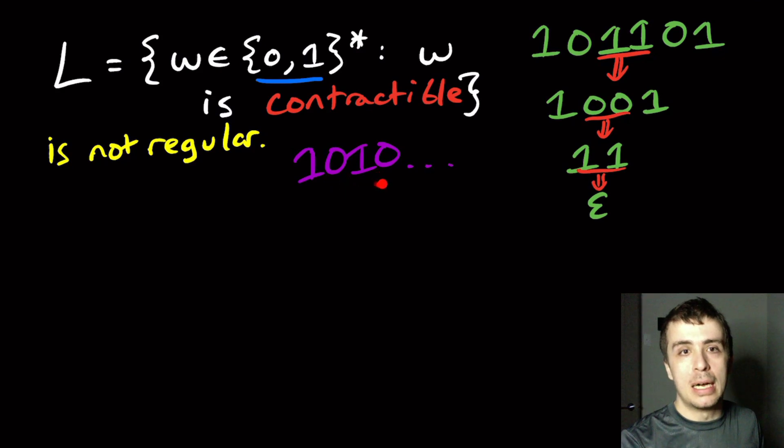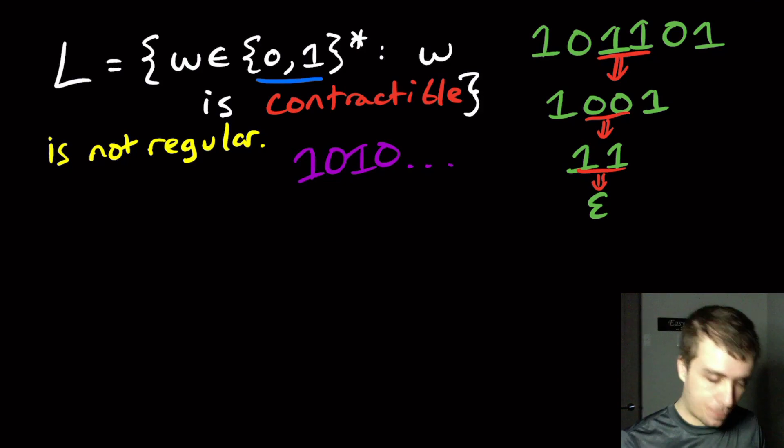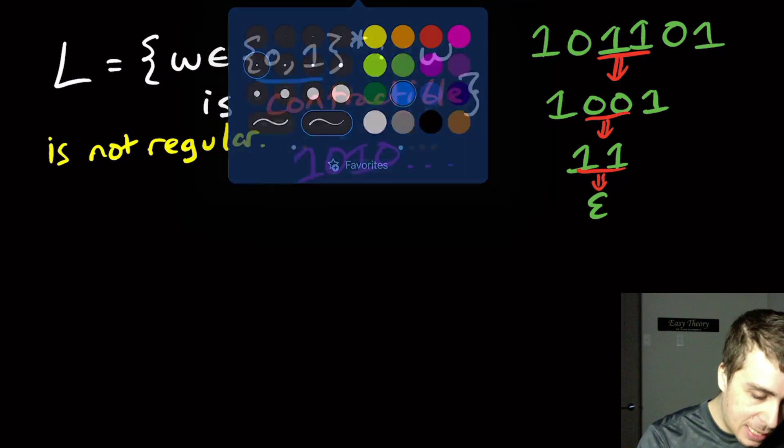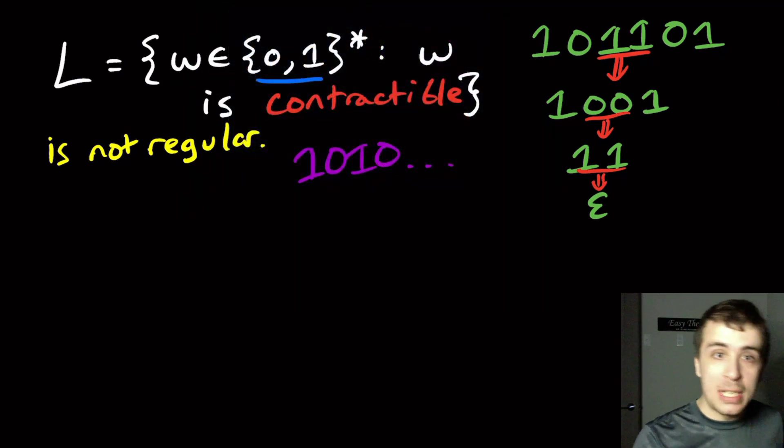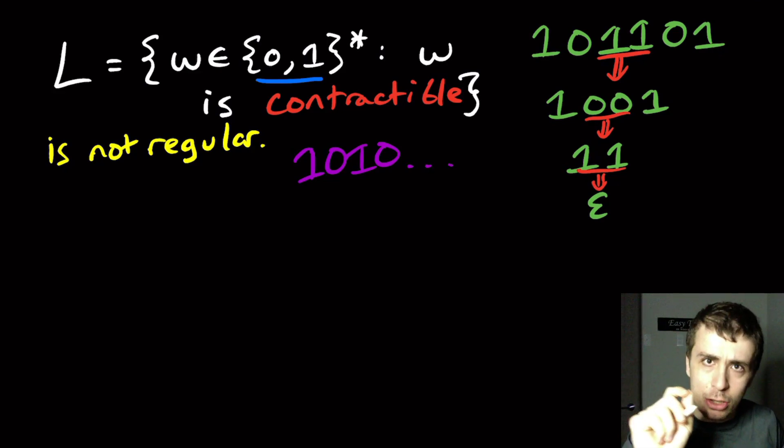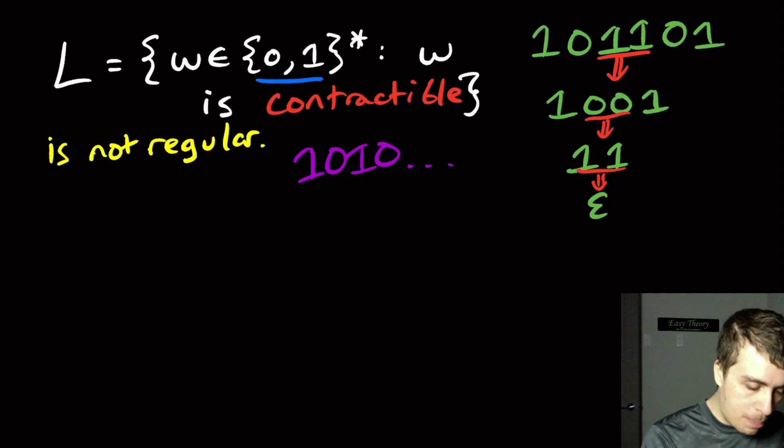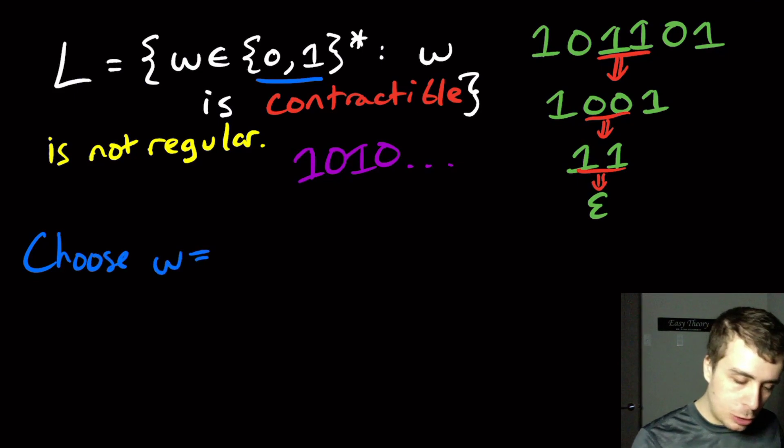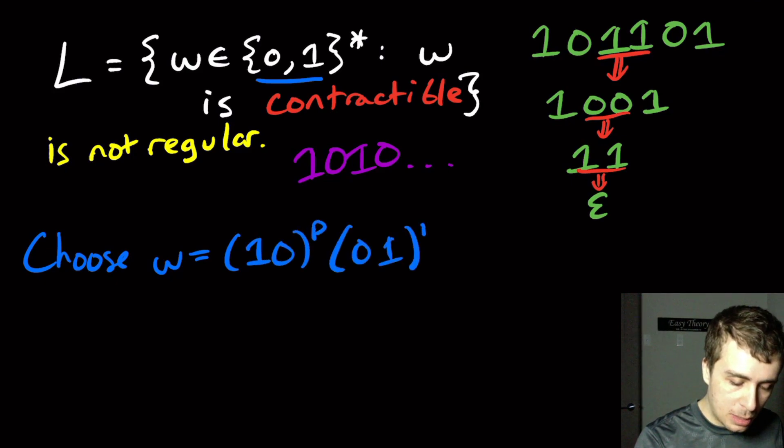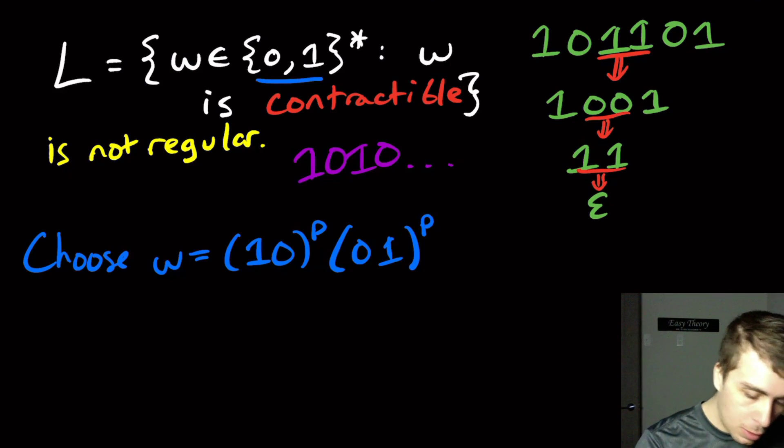Based on that idea, we want to have something that is just barely contractible. So what do we pick? We're going to choose, in the pumping lemma, the string (10)^P(01)^P.